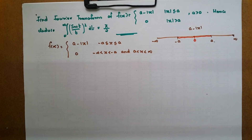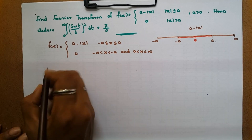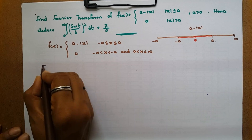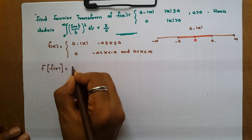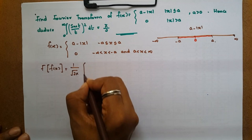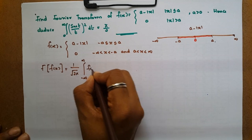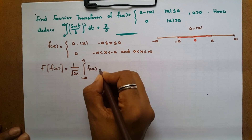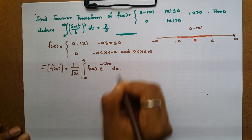The Fourier transform of f(x) is equal to 1 by root 2π into the integral from minus infinity to infinity of f(x) into e raised to minus iλx dx.